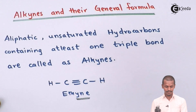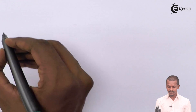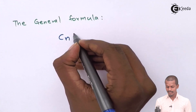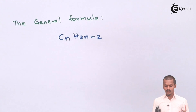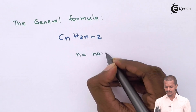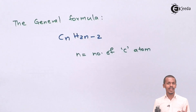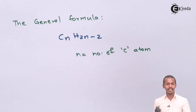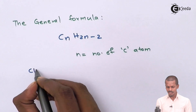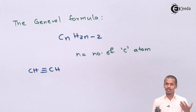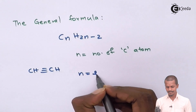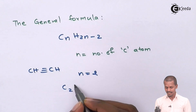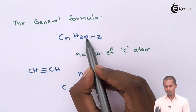Now let us talk about the general formula. The general formula of alkynes is CₙH₂ₙ₋₂, where n means the number of carbon atoms of that particular hydrocarbon. If we apply this formula to the alkyne we have — that is CH≡CH — and we consider that the total number of carbons is 2, therefore n is equal to 2. Applying the formula: 2×2 = 4, and 4−2 = 2, giving us H₂.